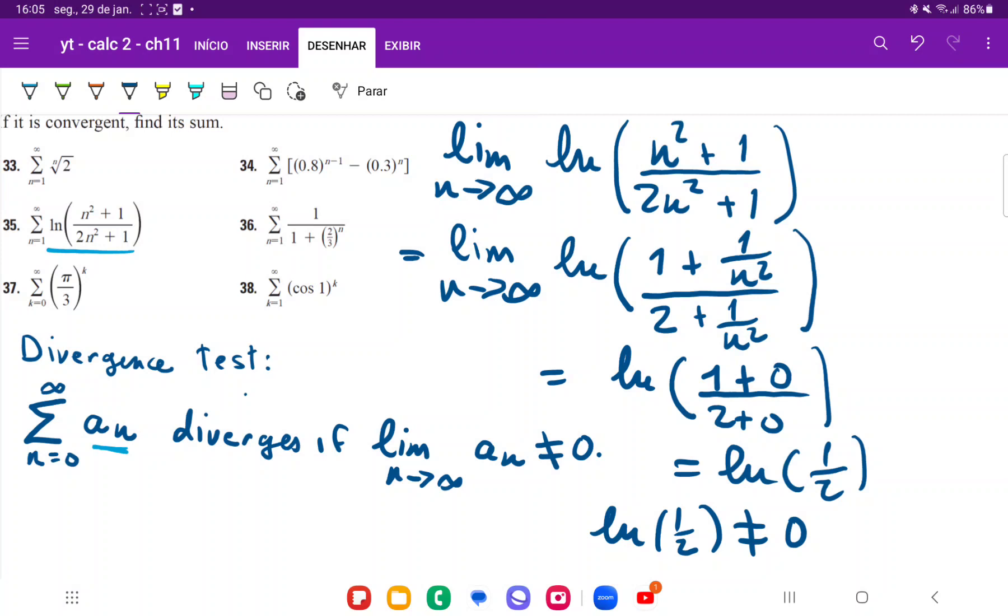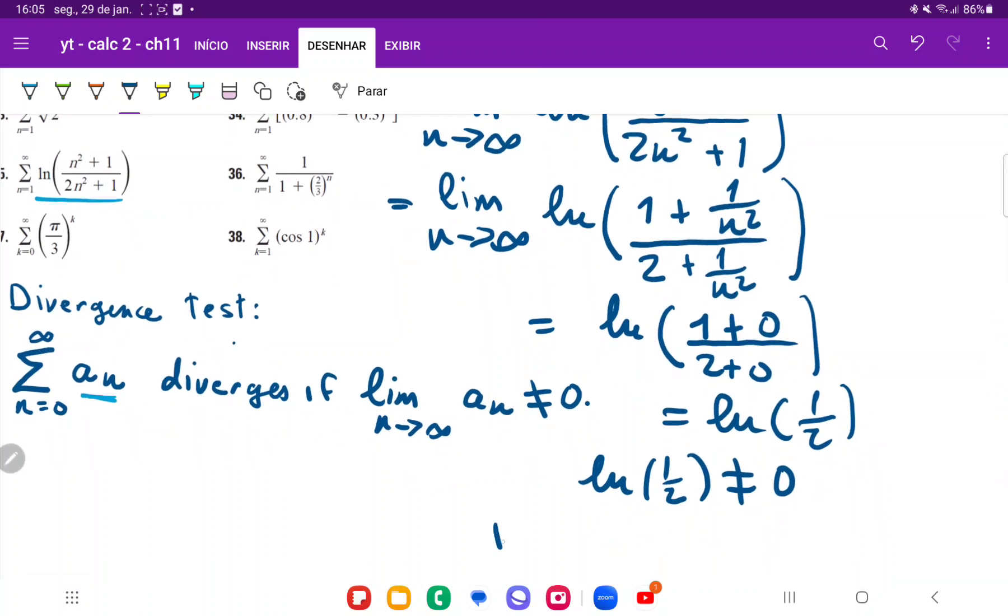that sum is always going to change with every added term. So it diverges because of the divergence test. And that's it for problem 35.